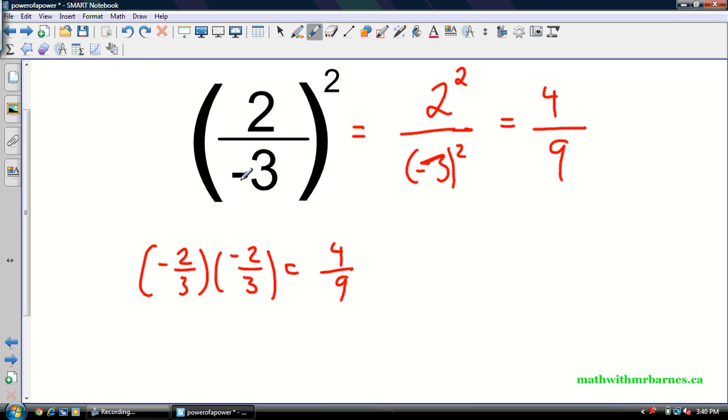Also important to recognize, guys, it doesn't matter where this negative sign goes. It could go right here. It could go right here. It could go right here. It's all the same thing. Negative 2 over 3 is equal to negative 2 over 3 is equal to 2 over negative 3. So these are all exactly the same things.